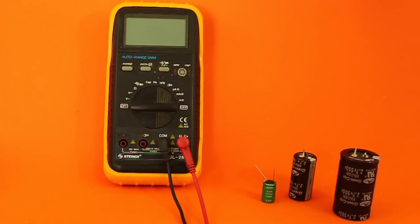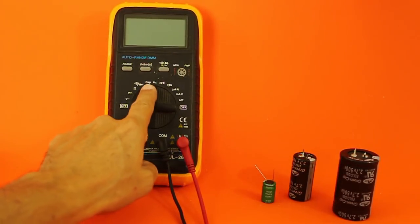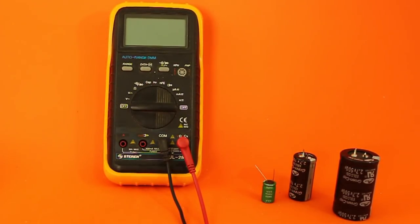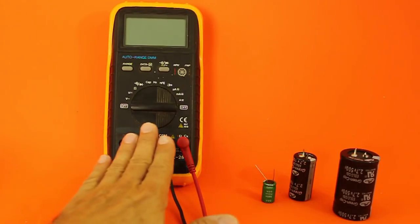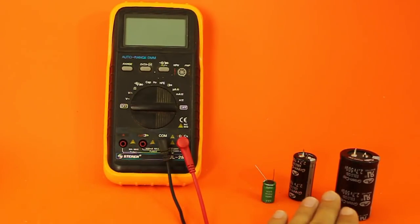Most multimeters can measure capacitance, but their range goes typically to a maximum of 2,000 microfarads, so it will be impossible to use your multimeter to measure the capacitance of a supercapacitor.